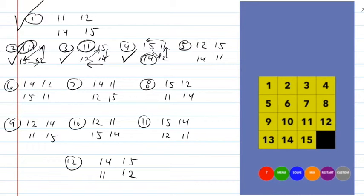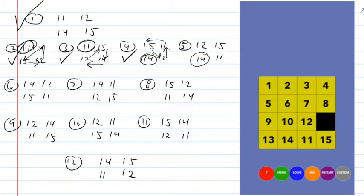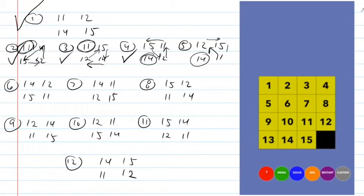In case five, the fourteen is again in the right place, but the eleven, twelve, and fifteen need to be cycled clockwise. I move the fourteen over, cycle the eleven, twelve, and fifteen clockwise, then move the fifteen there. That takes care of case five.